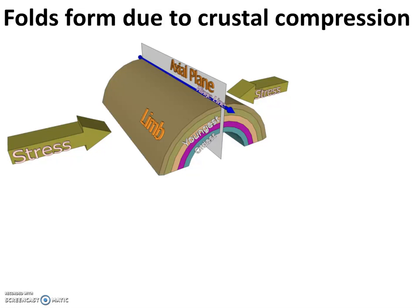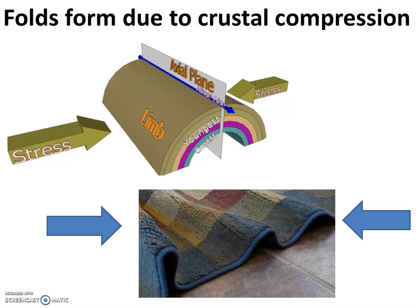As the earth's crust experiences compression, folds can form as the crust is shortened and thickened. This is analogous to pushing on the ends of an area rug and seeing the wrinkles that form on the rug. Commonly this occurs along zones of convergence, but can occur within a plate as well, as parts of the plate experience compression.